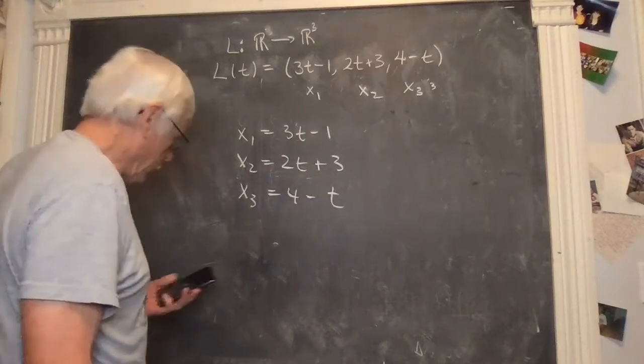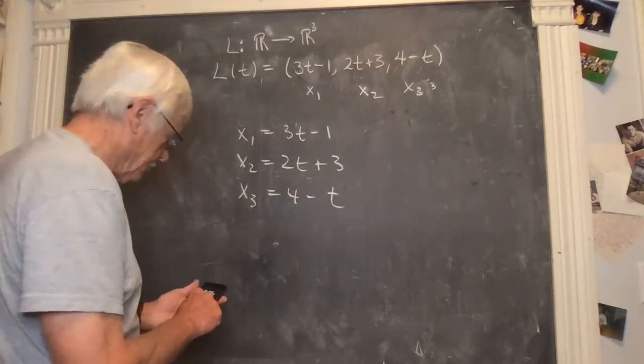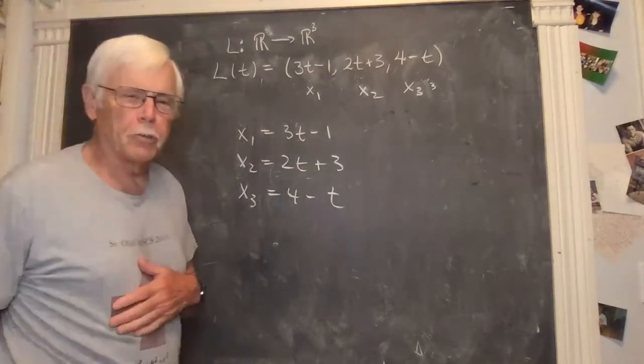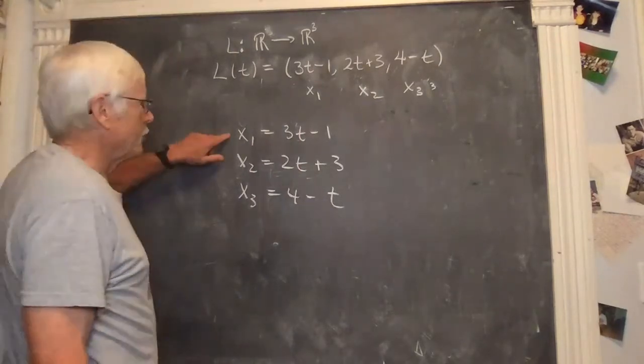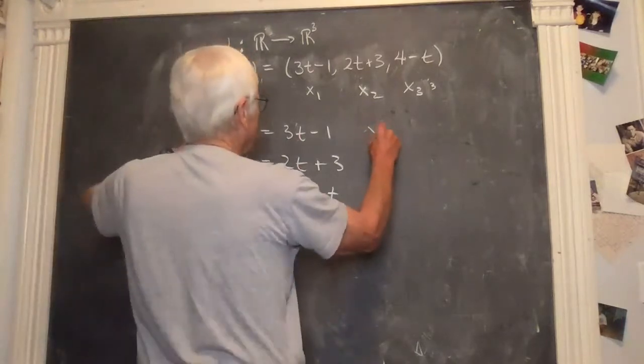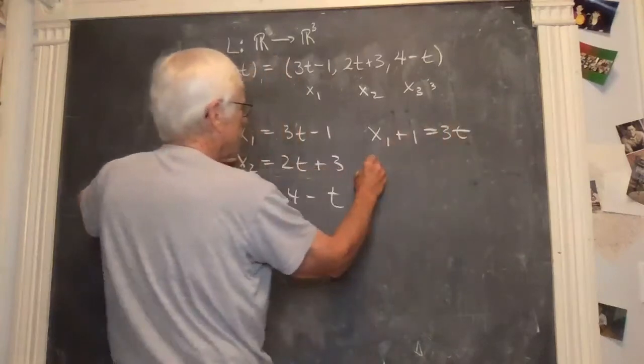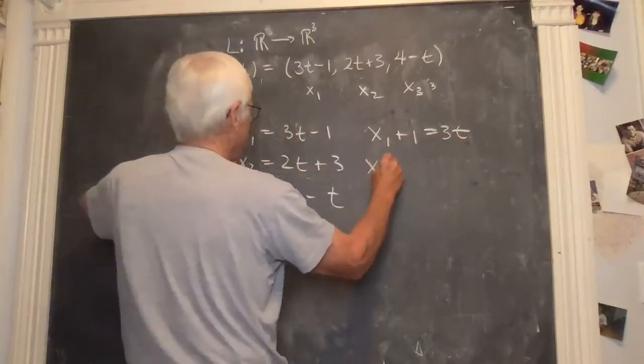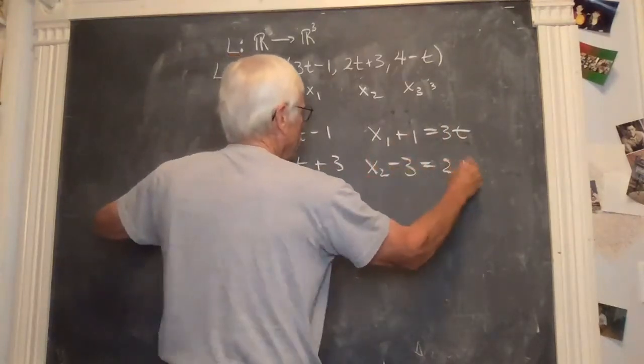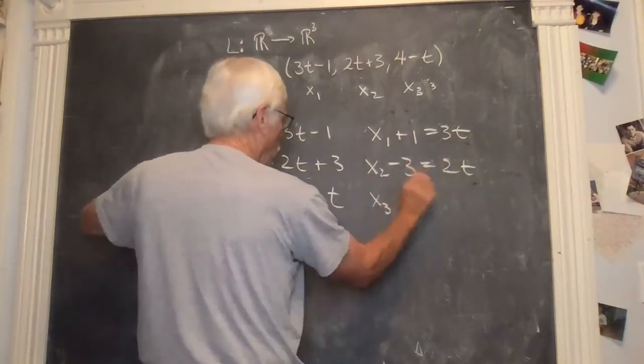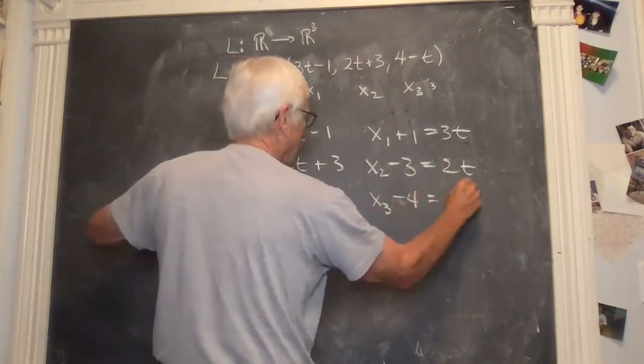And plugging in the same t gives you three different values for the x's, and we take advantage of that to find the so-called symmetric Cartesian equation. Hang on for a second. That was my brother.